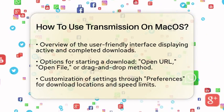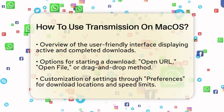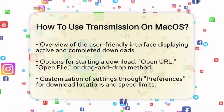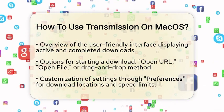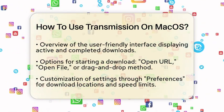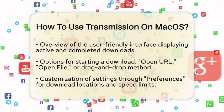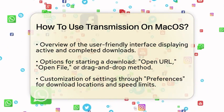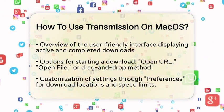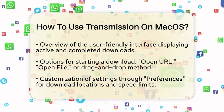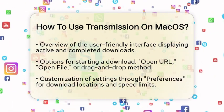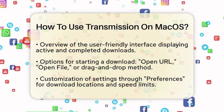To start downloading a torrent, you have a couple of options. Click on File in the menu bar and select either Open URL or Open File, depending on whether you have a torrent URL or a torrent file. You can also drag and drop a torrent file directly into the Transmission window, which is a quick and easy method.